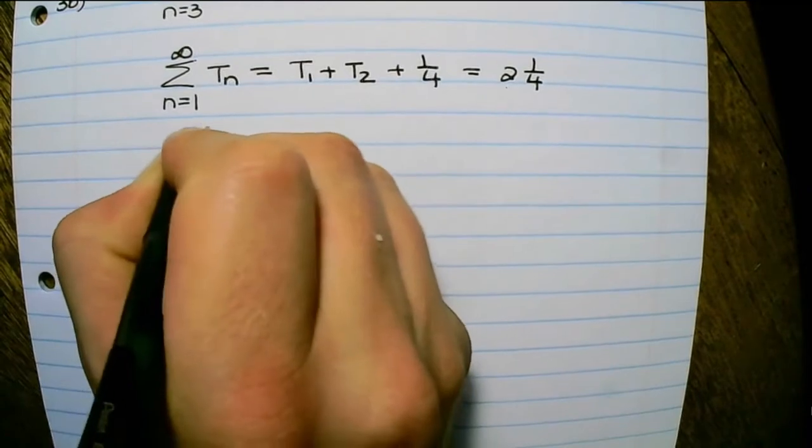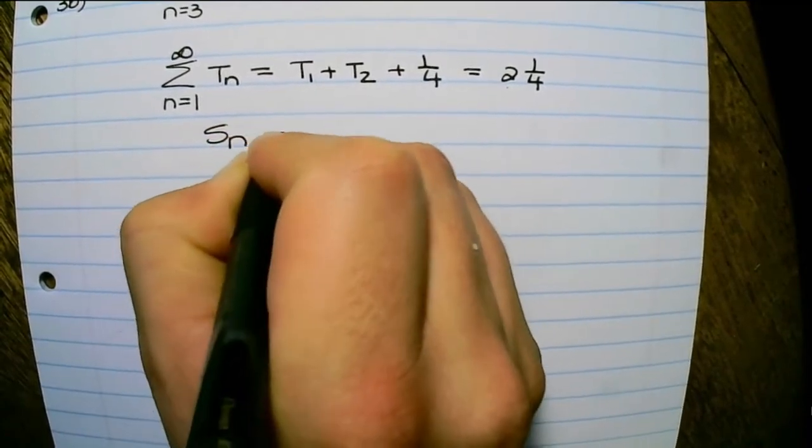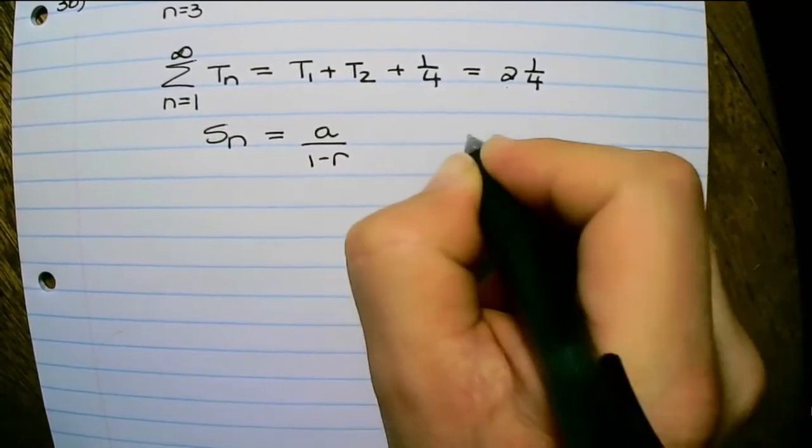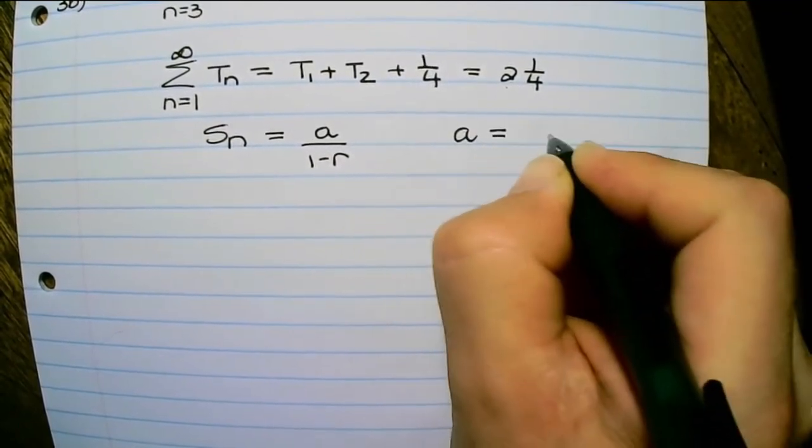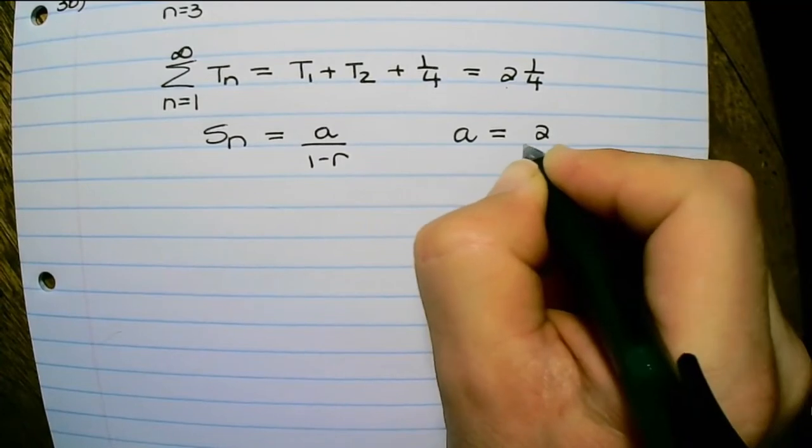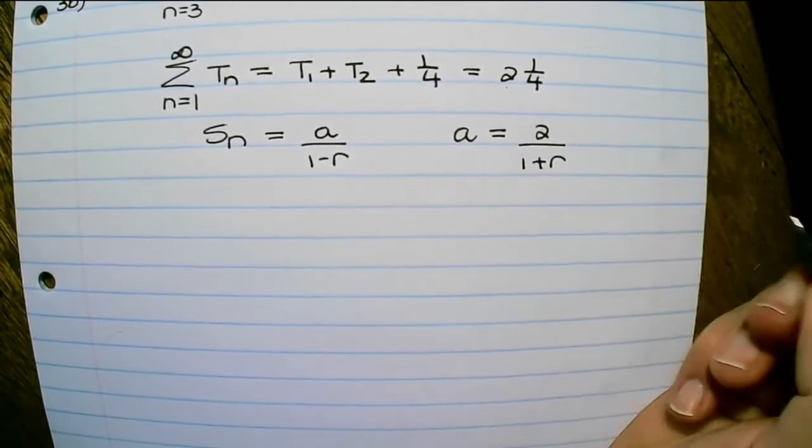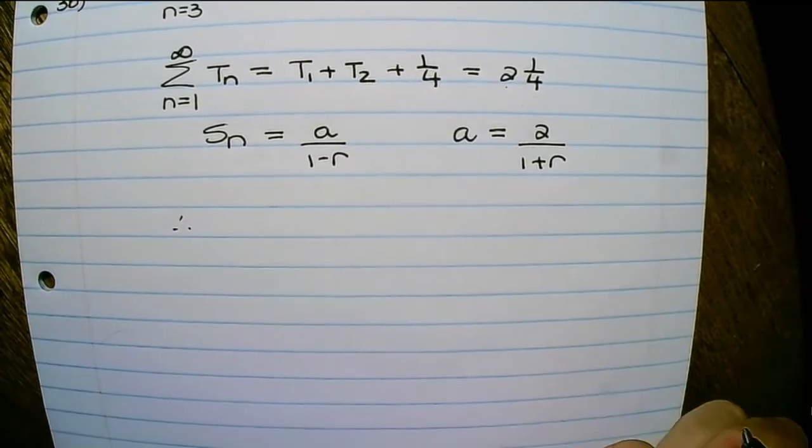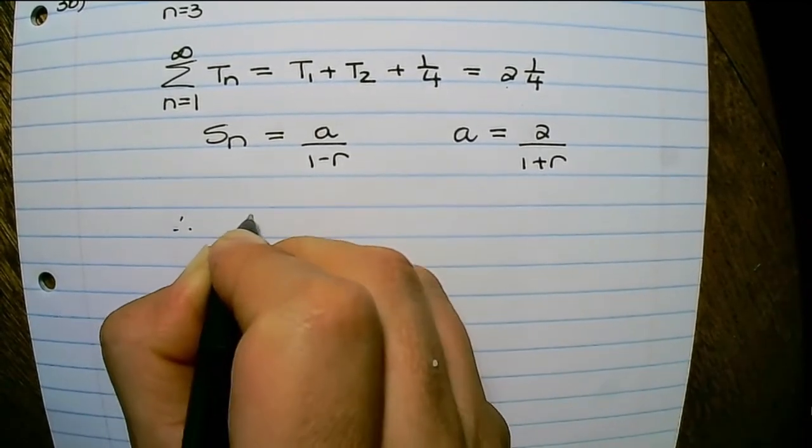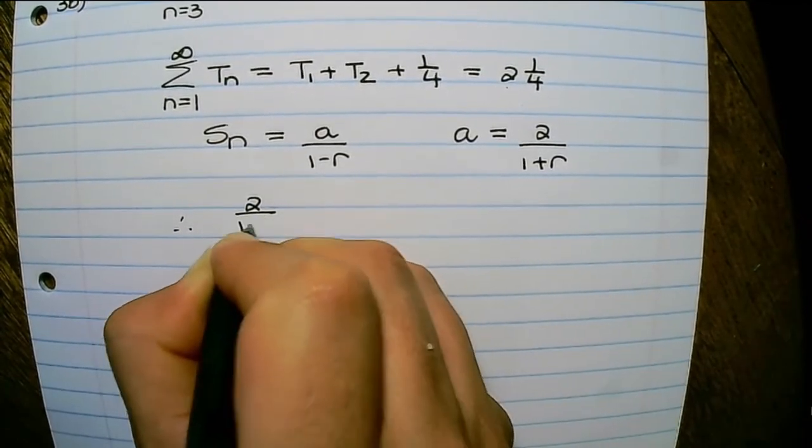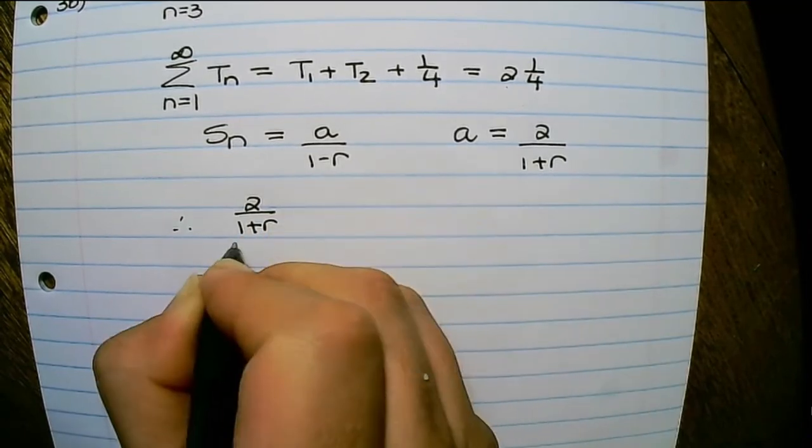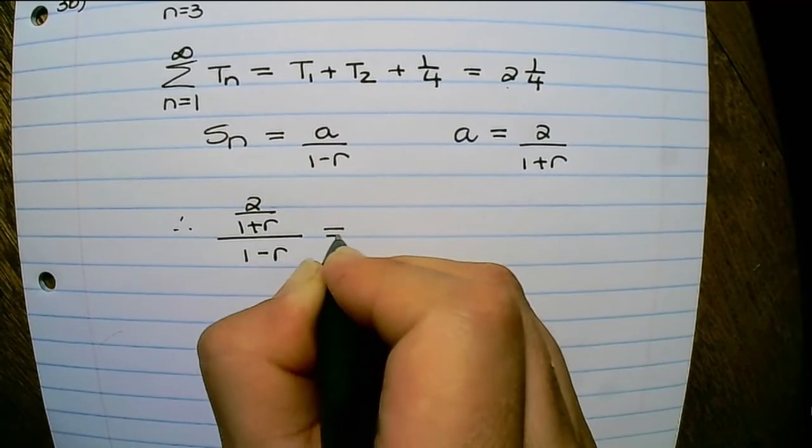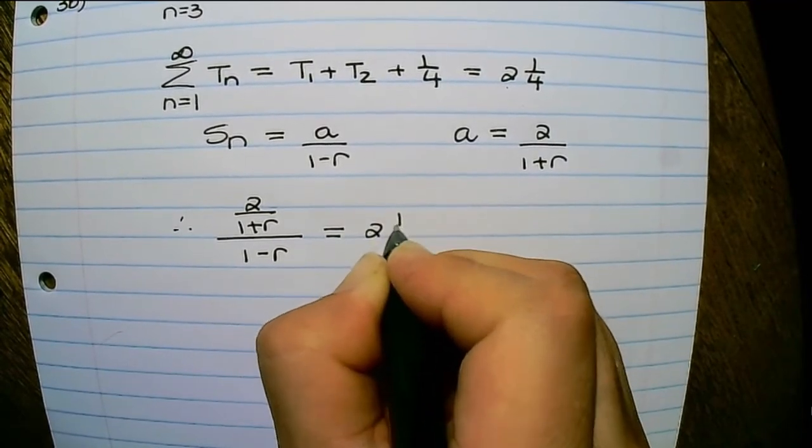Now we know that the sum to infinity equals a over 1 minus r. And we also know from the previous question that a equals 2 over 1 plus r. So therefore, the sum to infinity is 2 over 1 plus r, which represents a over 1 minus r, and this equals 2 and a quarter.